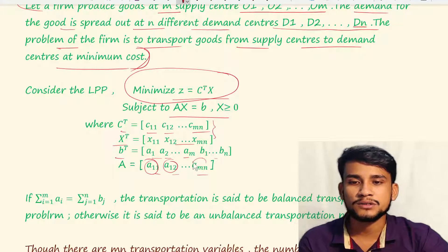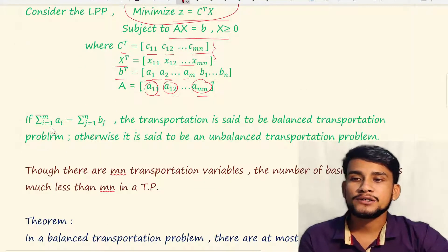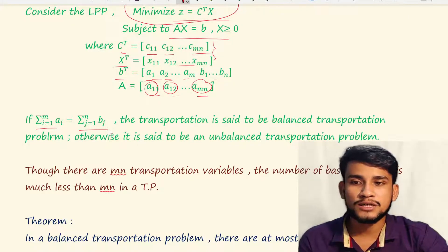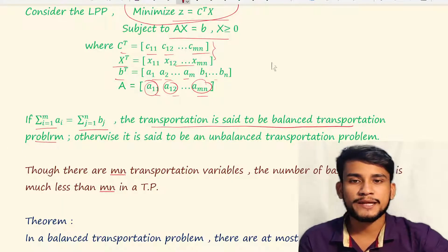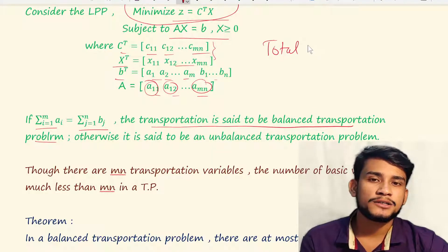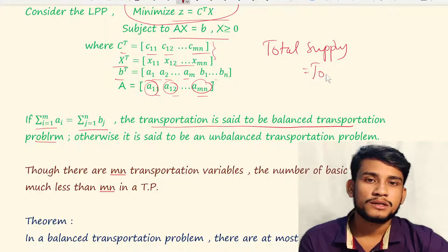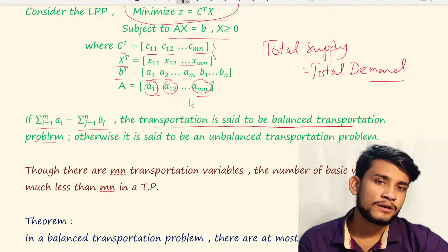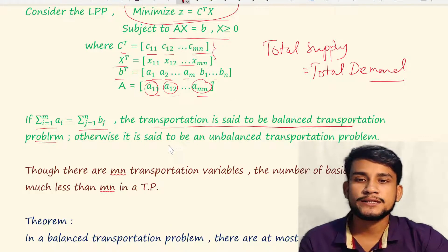If the summation of ai equals the summation of bj — that is, total supply equals total demand — the transportation problem is said to be a balanced transportation problem. Otherwise, it is said to be an unbalanced transportation problem.